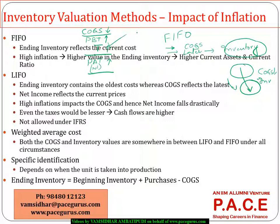Looking at the inventory part on the balance sheet, the inventory will be very high because it is composed of the later, higher-priced goods. High inventory means current assets will be higher, which means total assets could be higher, and whatever calculations are based on total assets are impacted accordingly.